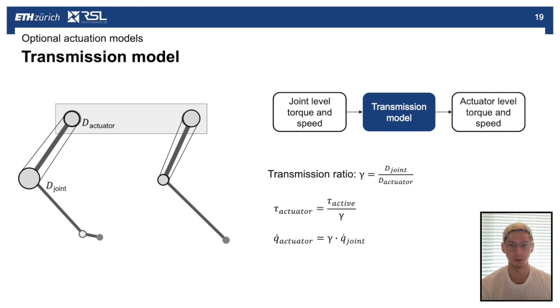Our next actuation model is a transmission model. The transmission model is applied when the legs are remotely actuated by, for example, a belt drive or cable or chain. This transmission decouples the one-to-one relationship between the joint and actuator position, and the actuator level torque and speed can then differ from the active torque and joint speed.